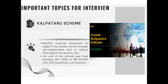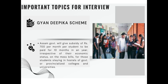The first scheme is the CULPRIT scheme, which is a financial assistance scheme to support the jobless youth of the state through self-employment. The cost of the scheme is around ₹7,000 to ₹25,000 with 20% beneficiary contribution — meaning if a person gets a benefit of ₹10,000, they have to contribute ₹2,000.